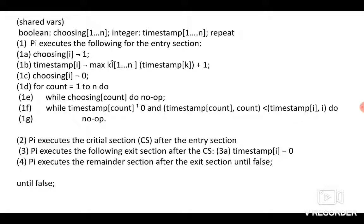In the Lamport Bakery algorithm, we have an array called choosing[1..n] and similarly one more array called timestamp. The process Pi executes the following for the entry section: it gets the token and fixes its timestamp, then waits for its turn. Once it gets the turn, it can execute the critical section. After exiting the critical section, it sets its timestamp to zero and then executes its remainder section.